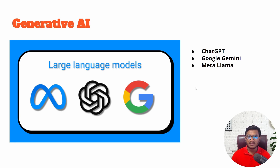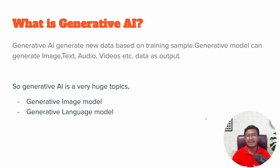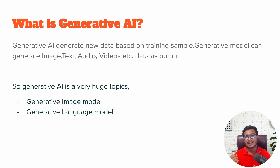All these applications like ChatGPT, Google Gemini, and Meta LLaMA are using something called a large language model in the back end. With the help of large language models, they are able to perform these operations. Now, Generative AI is nothing but a system that generates new data based on training samples. Generative models can generate image, text, audio, video, and so on as output.